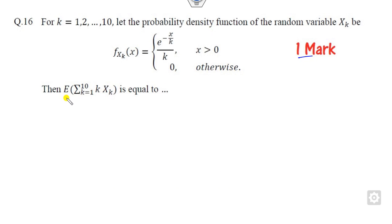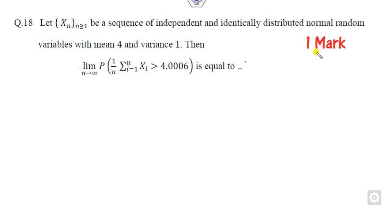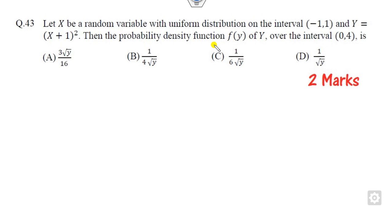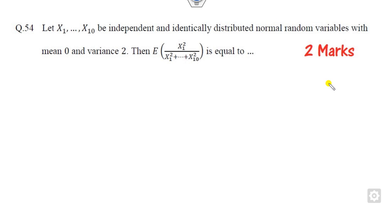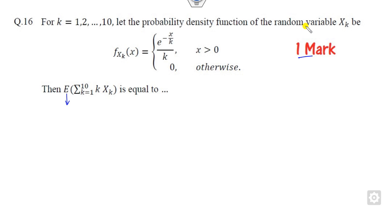The first question is one mark, related to finding an expected value. The second question is related to the joint density function where you have to find the constant value C, also one mark. The third question involves N approaching infinity to find the probability of a random variable. The fourth is two marks — finding almost sure convergence, that is the strong law of large numbers. The fifth is finding the probability density function of a new variable Y when Y is given as (X+1)², two marks. The sixth question is also two marks — finding the expected value of a ratio when normally distributed. In total, that is 9 marks.